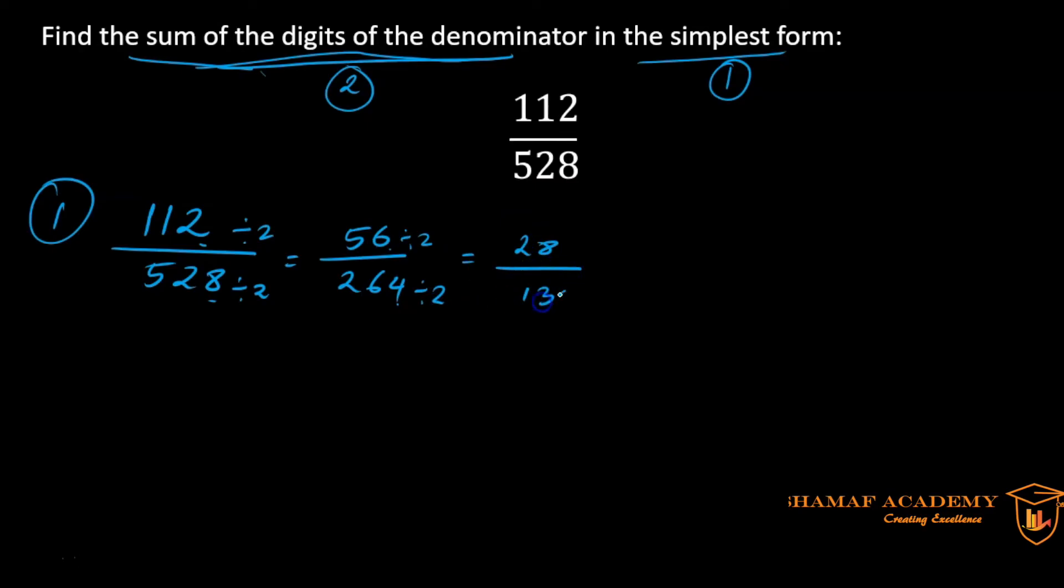So let's divide further. We get 28 divided by 2 gives us 14. And again, by which table? Two, because they still have even numbers at the end. So yes, 14 divided by 2 gives us 7, and 66 divided by 2 gives us 33. Now observe our numerator and denominator again.